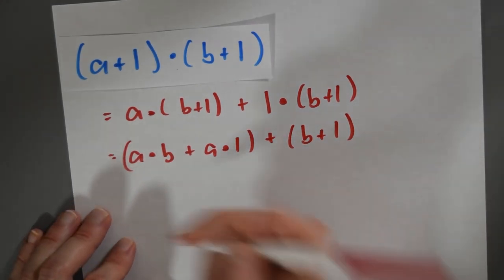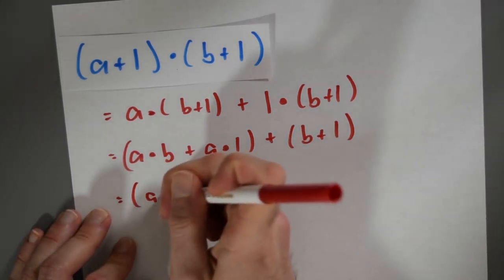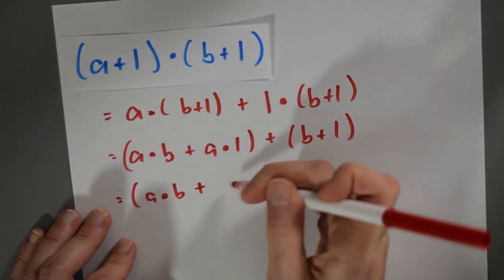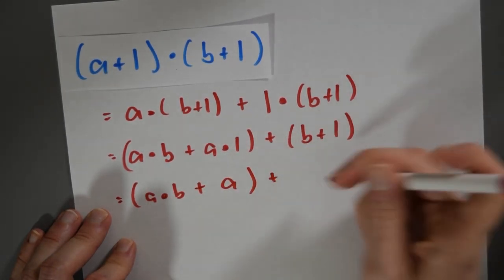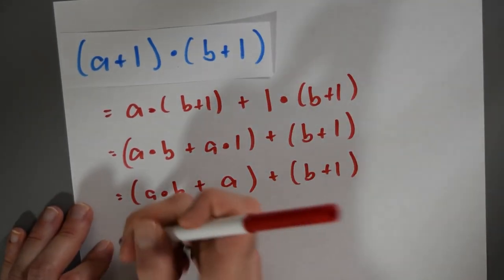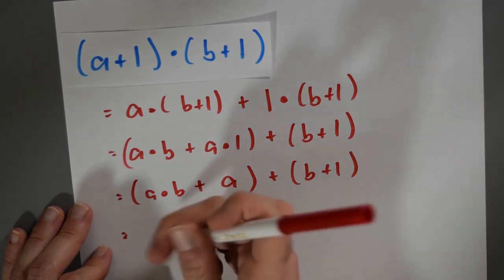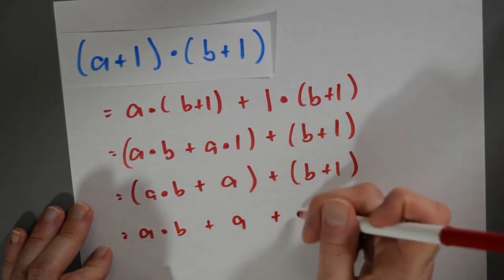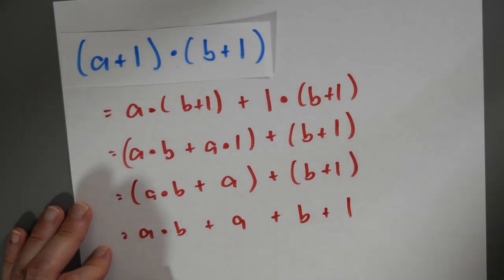Here I've got another multiplicative identity, so I can rewrite this as a·b + a + b + 1. And if I want to be sloppy with associativity again, I might just write that this is a·b + a + b + 1.